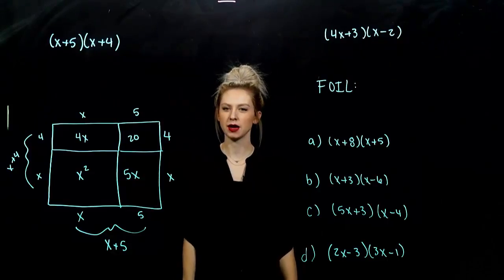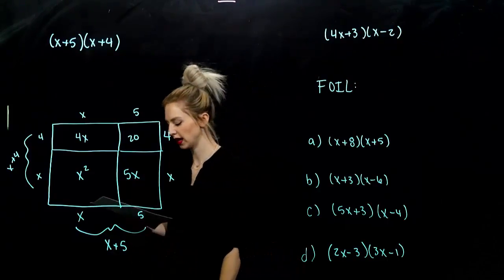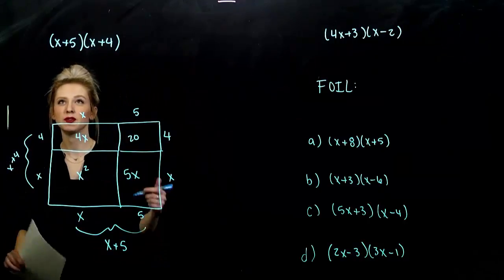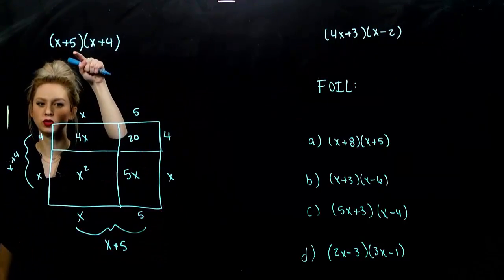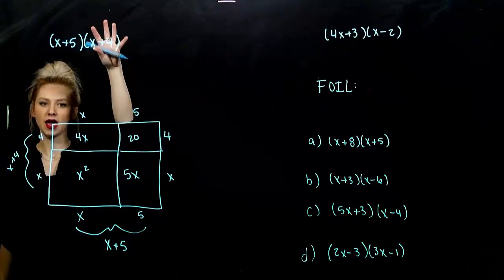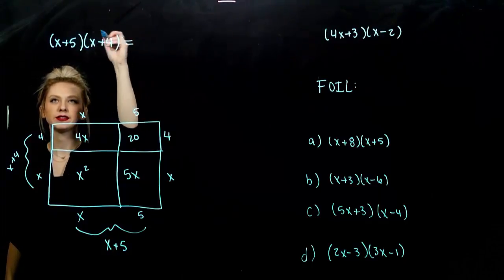Moving on to binomial times binomial now. What has to happen? Still the same thing. I need to take every term in the first one and multiply it by every term in the second one. So, let's see.